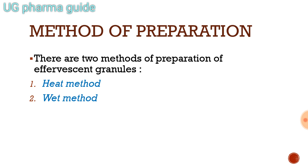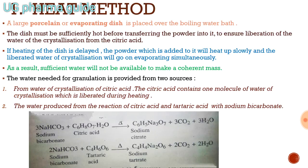The method of preparation: there are two methods of making effervescent granules — the heat method and the wet method. In the heat method, a large porcelain dish is placed over a boiling water bath. The dish must be sufficiently hot before transferring the powder into it.